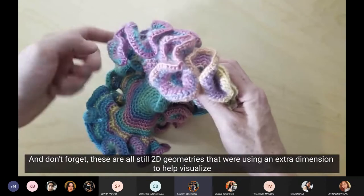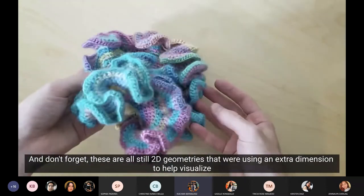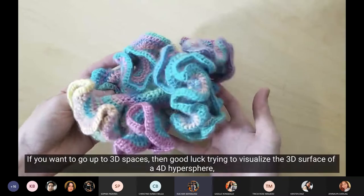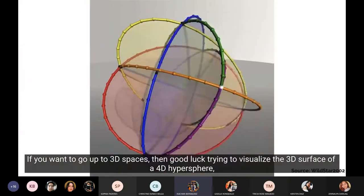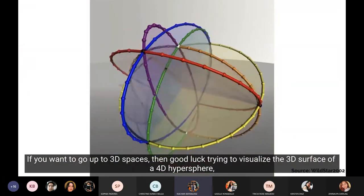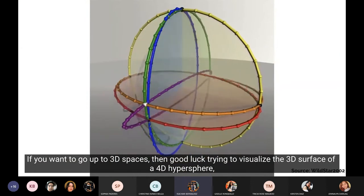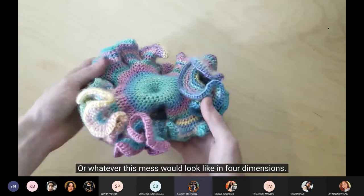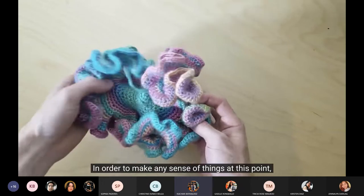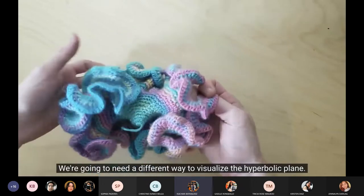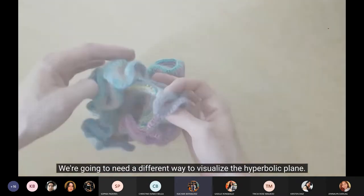Though it does give you a sense of how much larger hyperbolic space is compared to Euclidean. And don't forget, these are all still two-dimensional geometries that we're using an extra dimension to help visualize. If we want to go up to 3D spaces, then good luck trying to visualize the 3D surface of a 4D hypersphere, or whatever this mess would look like in four dimensions. In order to make any sense of things at this point, we're going to need a different way to visualize the hyperbolic plane.